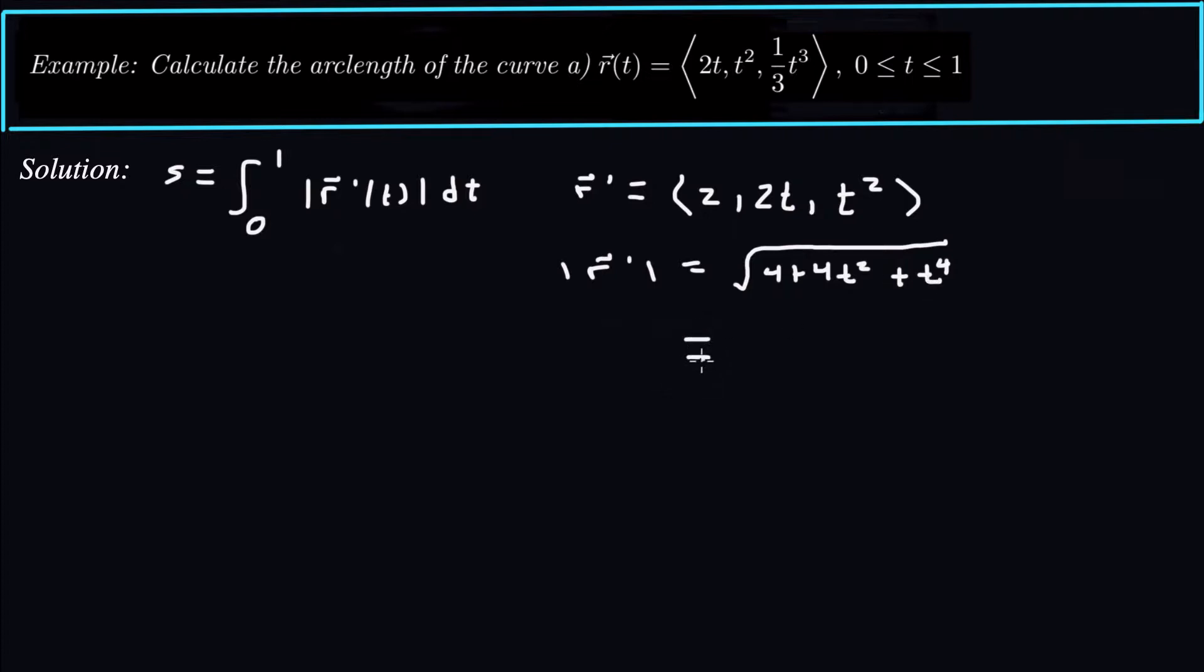So notice that under the radical, you can factor this thing as t to the 4. So take the square root of that, t squared, plus 2 quantity squared. So that is very interesting. Now, that is the perfect square.